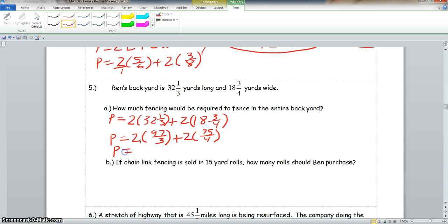So we add, perimeter is equal to. Now, 2 times 97 will give us 194 all over 3, plus, remember this is really 2 over 1, 2 times 75 is 150 all over 4. Now, I'm going to move this up here. So our perimeter is 194 over 3, plus 150 over 4.